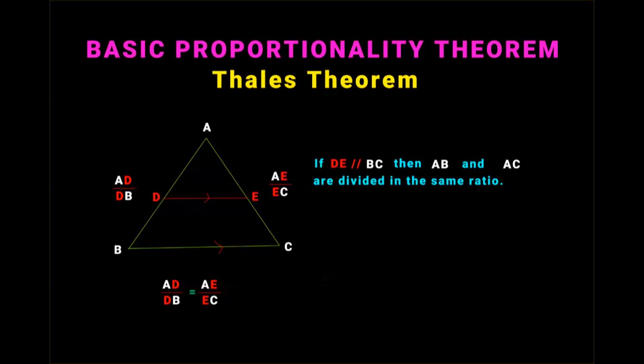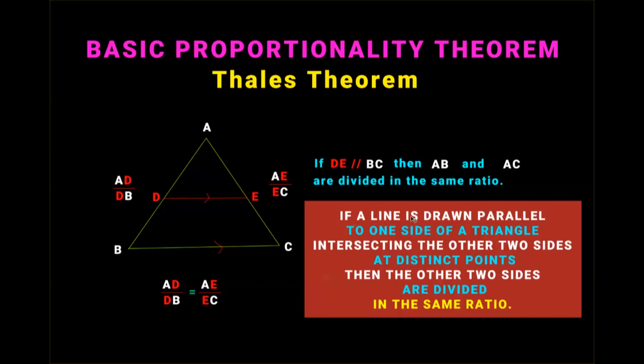Let us take a look at the statement of the Basic Proportionality Theorem again. It says that if a line is drawn parallel to one side of a triangle (like in our case, DE is drawn parallel to side BC), intersecting the other two sides at distinct points (which means DE intersects AB at D and AC at E), then the other two sides (which means AB and AC) are divided in the same ratio, which means AD by DB must be equal to AE by EC. So that is the Basic Proportionality Theorem.